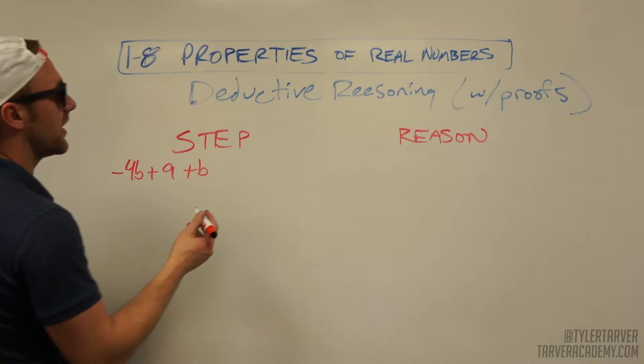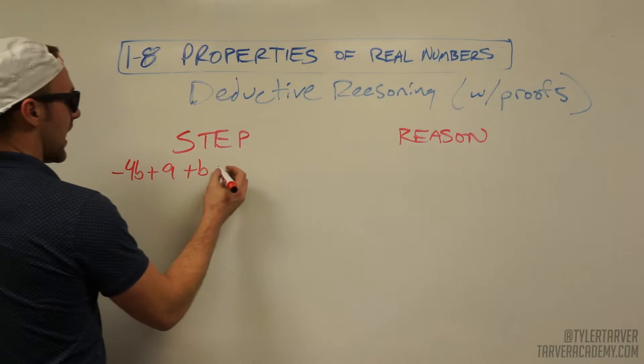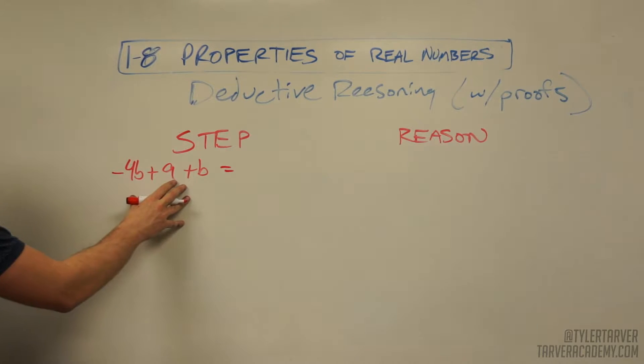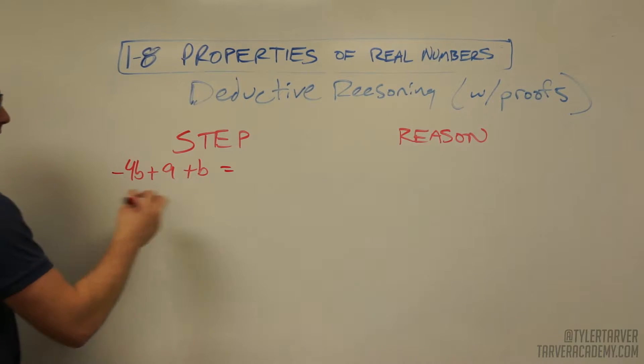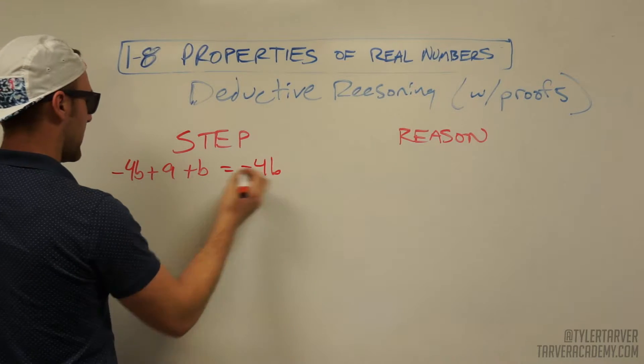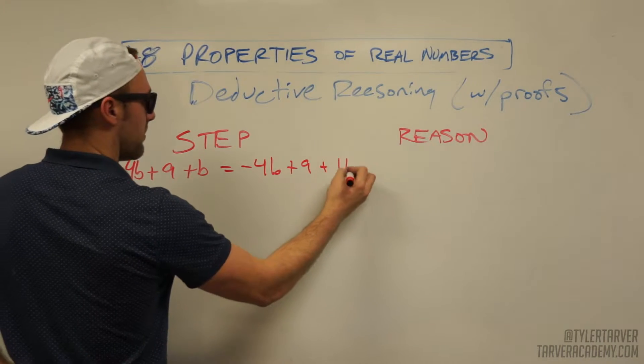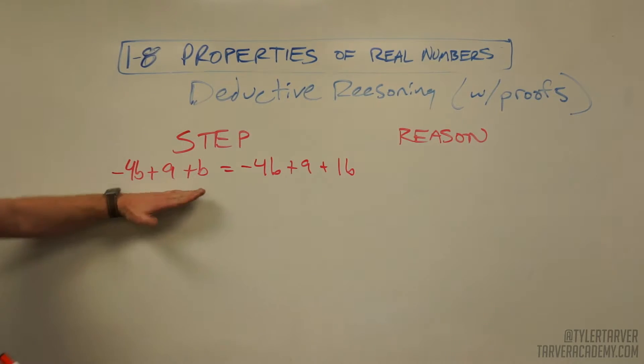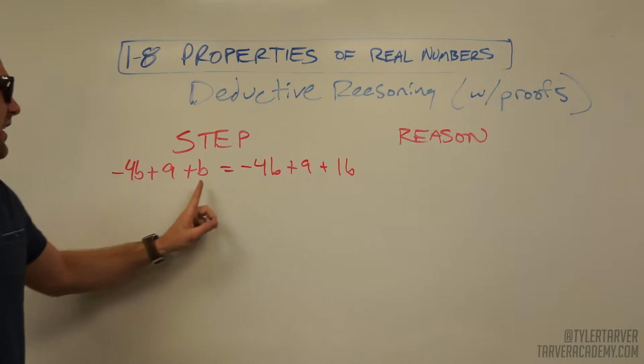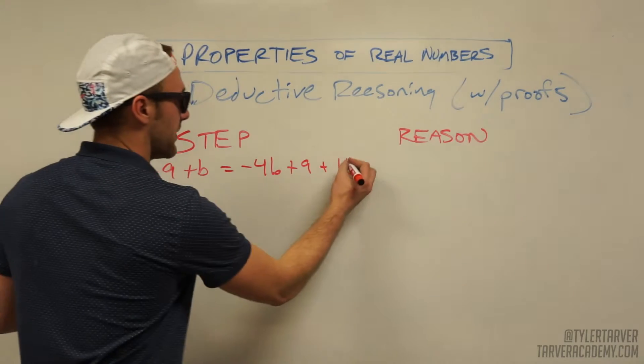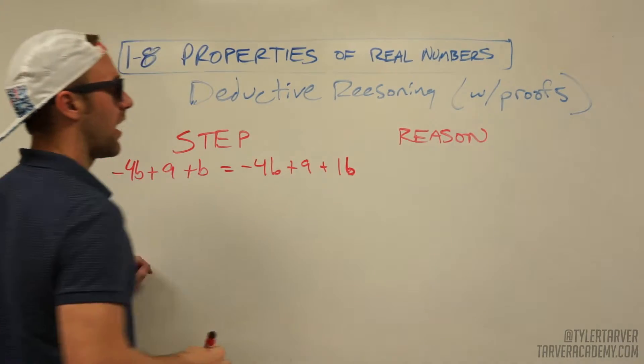The first thing I'm going to do is I need to get this to where there's a number in front of that B, so I'm going to do negative 4B plus 9 plus 1B. All I've done from this problem to here is I've put a 1 in front of the B.